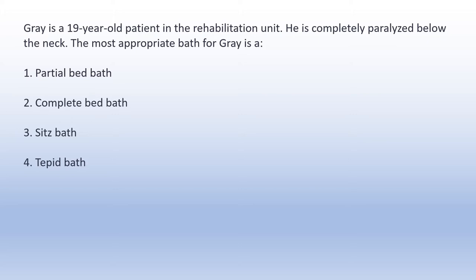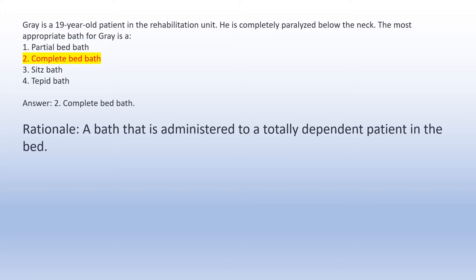Mr. Gray is a 19-year-old patient in the rehabilitation unit. He is completely paralyzed below the neck. The most appropriate bath for Mr. Gray is: 1. Partial Bed Bath. 2. Complete Bed Bath. 3. Sitz Bath. 4. Tepid Bath. Answer 2: Complete Bed Bath. Rationale: A complete bed bath is administered to a totally dependent patient in the bed.